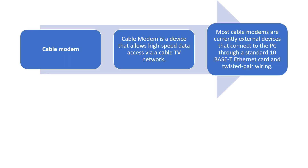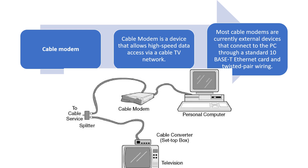The next type of modem is the cable modem. This is a device that allows high-speed data access through the cable TV network. Most cable modems are external devices that connect to the PC through a standard 10-base Ethernet card and twisted pair wiring. In the diagram, one line is connected to the cable converter setup box and the other line is for the cable modem, which in turn is connected to the personal computer to access the data.